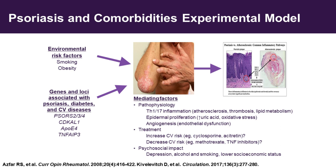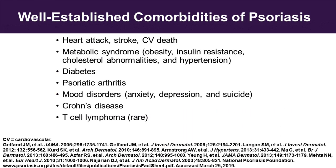What you need to know is what are the most well-established comorbidities for patients with psoriasis that have the most clinical significance. This includes cardiometabolic disease, which results in premature mortality especially in people with more severe disease, diabetes, inflammatory arthritis, mood disorders, inflammatory bowel disease — Crohn's in particular — and then T-cell lymphoma of the skin, which is uncommon, but if you're a dermatologist or rheumatologist managing this disease and the skin is getting worse, you have to keep that in the back of your mind, because a lot of our therapies could aggravate that problem.